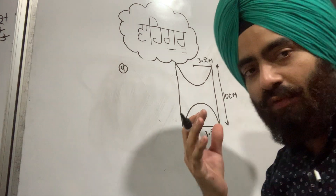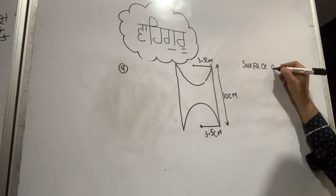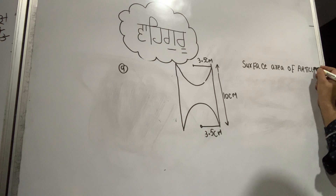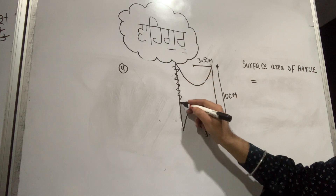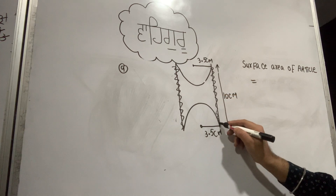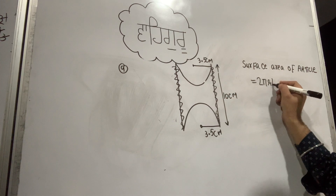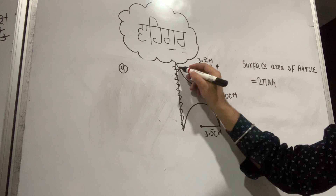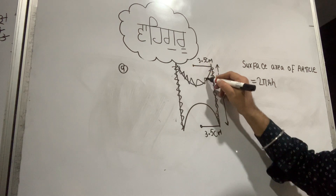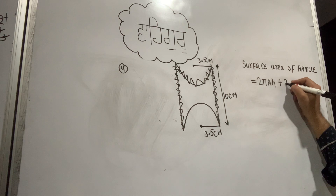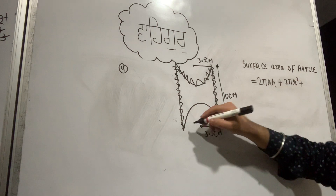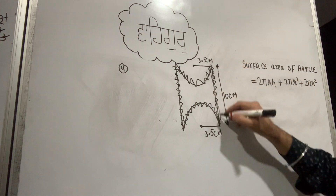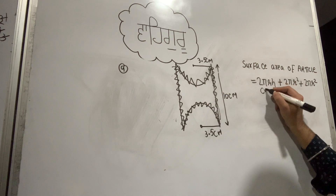We need to find the total surface area of the remaining solid. The curved surface of the cylinder is 2 pi r h. For each hemisphere, the curved surface area is 2 pi r squared. So we have two hemispheres contributing 2 times 2 pi r squared, which is 4 pi r squared in total.